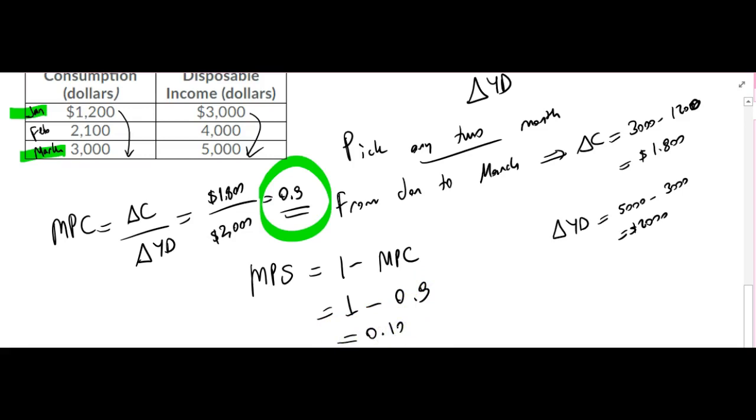Which means for each additional dollar in disposable income, $0.10 will go to my savings. So the answer to that question will be 0.1.